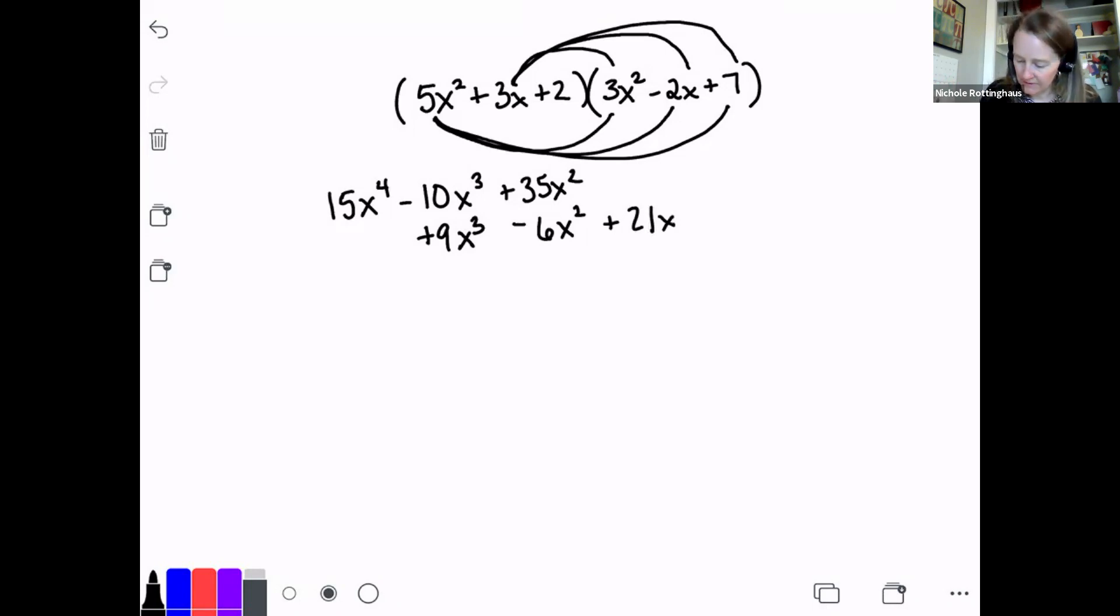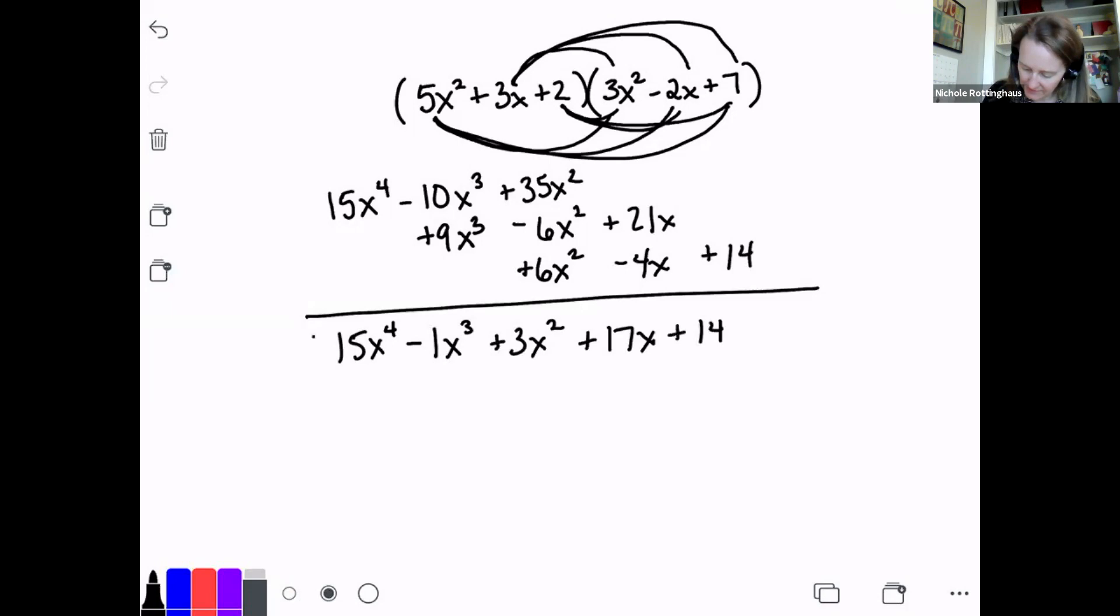Then I'll do 3x times negative 2x, which gives me minus 6x squared. I'm going to line that up underneath that 35x squared. And then I've got 3x times 7 is 21x. Now I'll do the next one. 2 times 3x squared gives me 6x squared, and I'm lining that up under the x squared terms, minus 4x under the x terms, plus 14. I'm going to add everything up. I have 15x to the fourth, then minus 10x to the third plus 9x to the third gives me minus 1x to the third. 35x squared minus 6x squared plus 6x squared cancel, so I'm left with 35x squared. 21 minus 4 is 17x plus 14. And that's my answer.